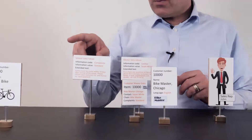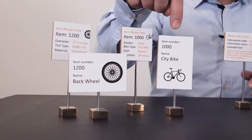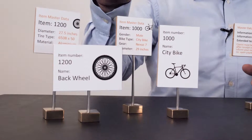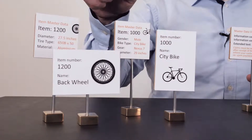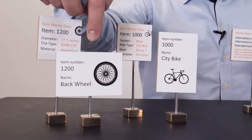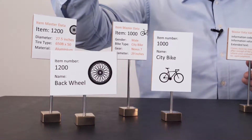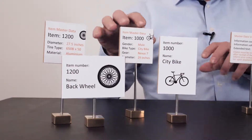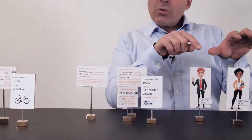Looking at the items to sell, item number 1000 has master data information added — for instance the bike type is a city bike, the wheel diameter is 29 inch, it's a male bike, it's a Nexus 7 gear bike. We might also want to sell a back wheel directly to the customer, and on the back wheel we can add the tire dimension, tire type, wheel diameter, etc. — all set up directly on the items.